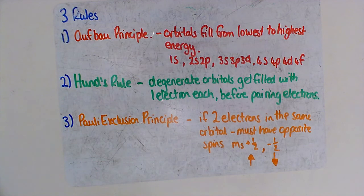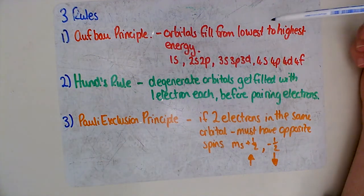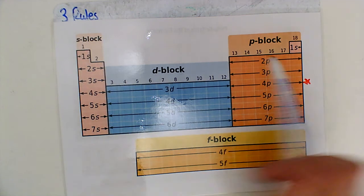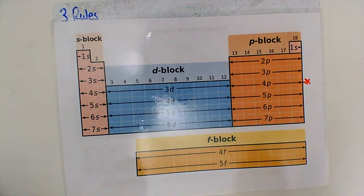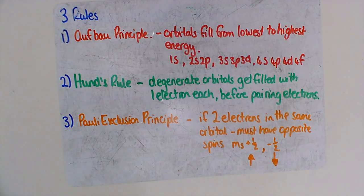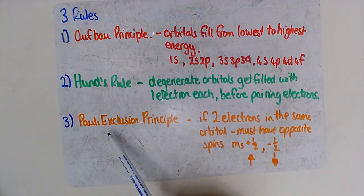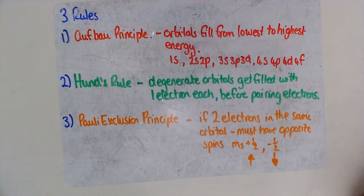To summarize the three rules: the Aufbau principle says we fill orbitals from lowest to highest energy — 1s, 2s, 2p, 3s, 3p, 4s, 3d, 4p. Hund's rule says we fill degenerate orbitals individually before pairing electrons — so with three p orbitals, we put one electron in each before pairing. The Pauli exclusion principle states that if two electrons are in the same orbital, they must have opposite spins — no two electrons can have the same four quantum numbers.